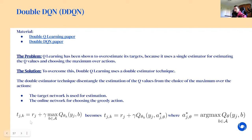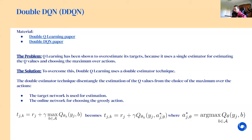That way you decouple the two things and are less biased. To prove this property formally you should read the paper, but here's the simple change in the algorithm: the target computed at step k for transition j is r_j + gamma * max Q for the target network, and you replace the argmax for the target with the argmax over the online network. It's a simple trick and it leads to better results than vanilla DQN.